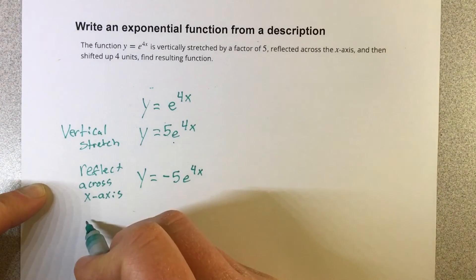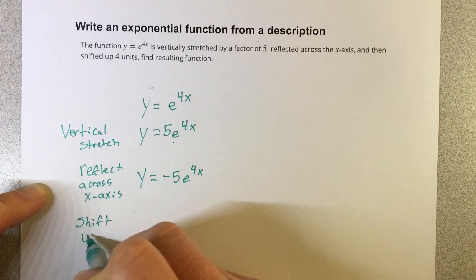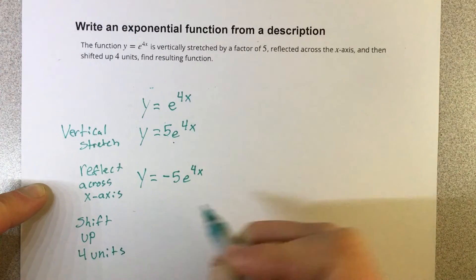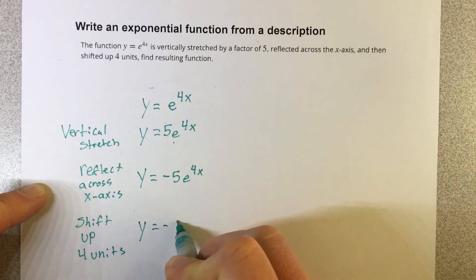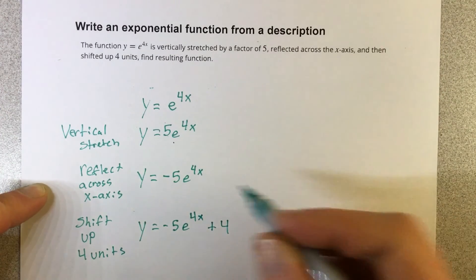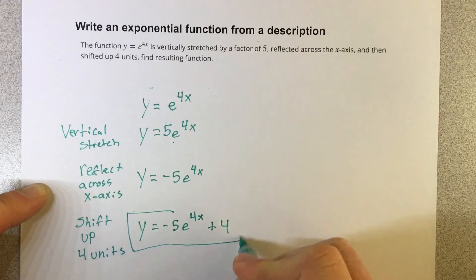And then we're going to shift up 4 units. So I would have y equals negative 5e to the 4x. If I'm shifting it up 4 units, that's plus 4. And this would be the new function.